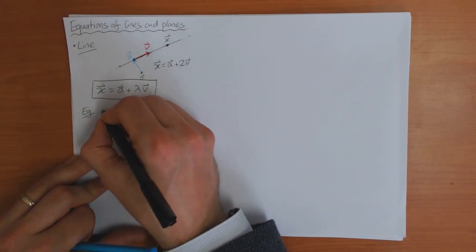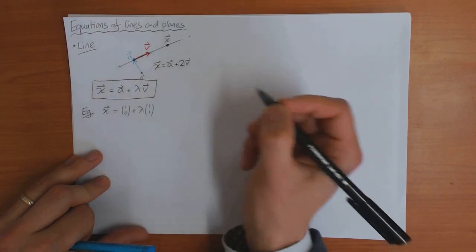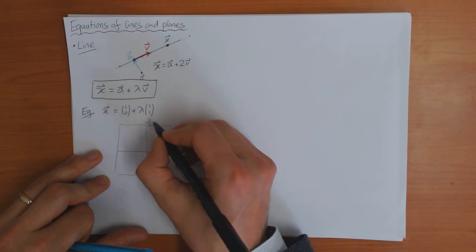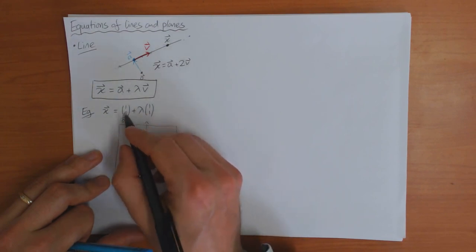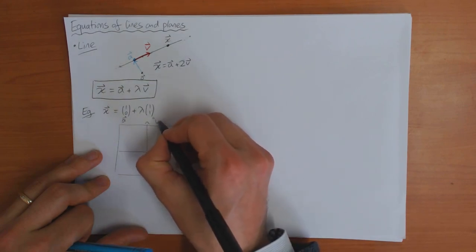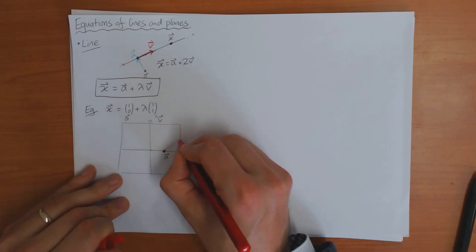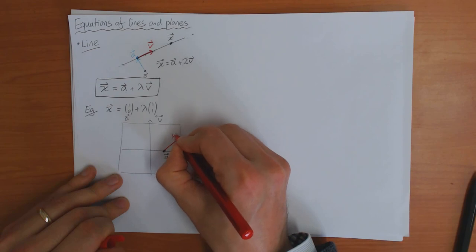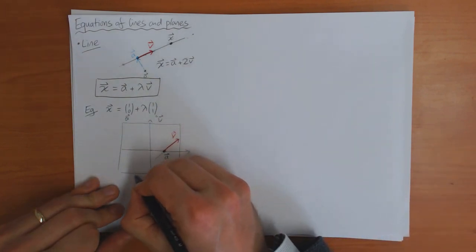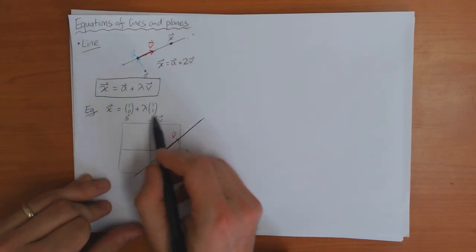Let me give a simple example. Suppose x equals (1, 0) plus lambda times (1, 1). Here's my coordinates with origin at 0. Point a is (1, 0) — so that's the point a. And v is (1, 1), which is a vector 1 this way and 1 that way. So the line is what I can get starting from a and then moving in the direction of v, defining a line like this.